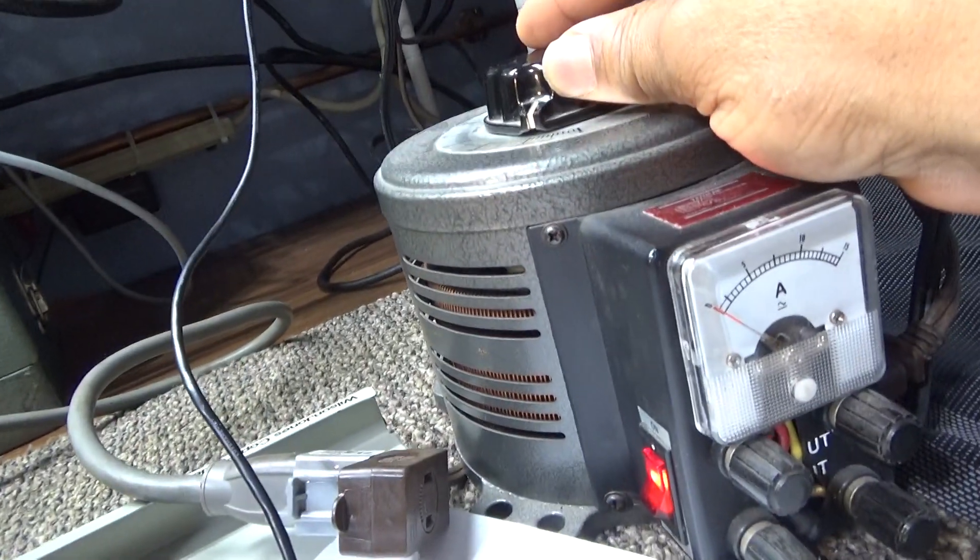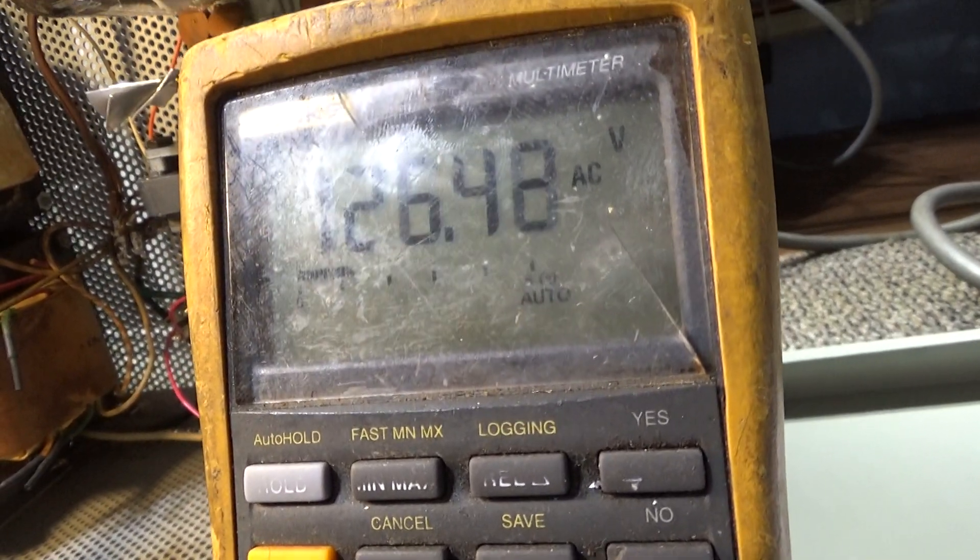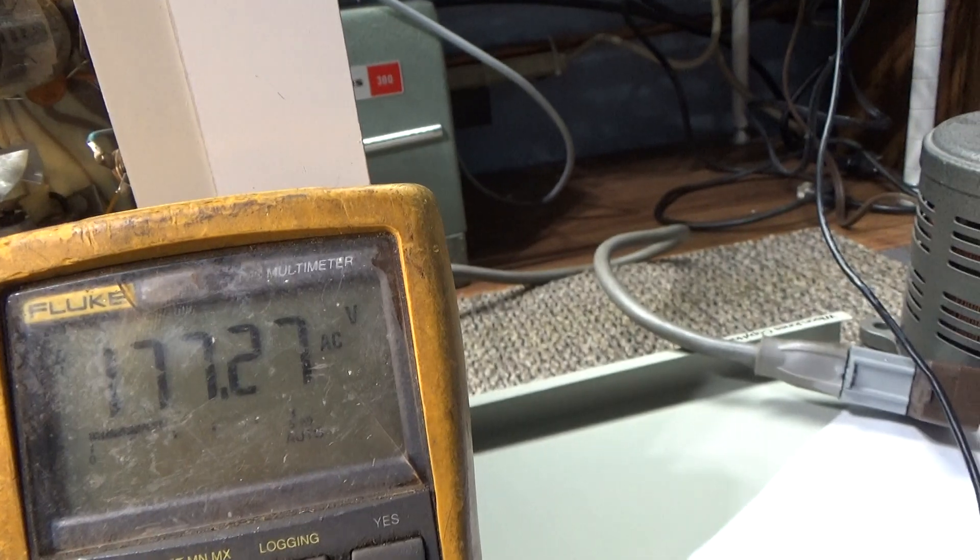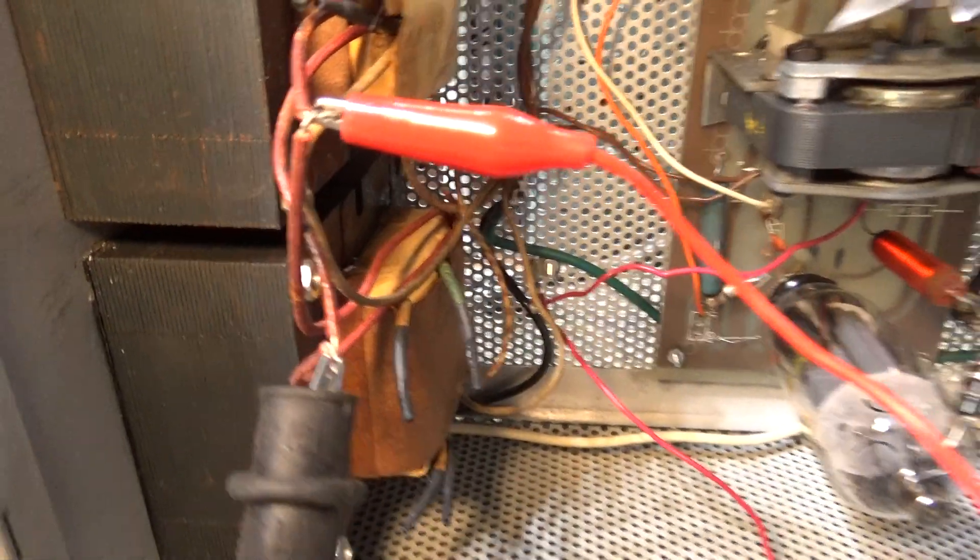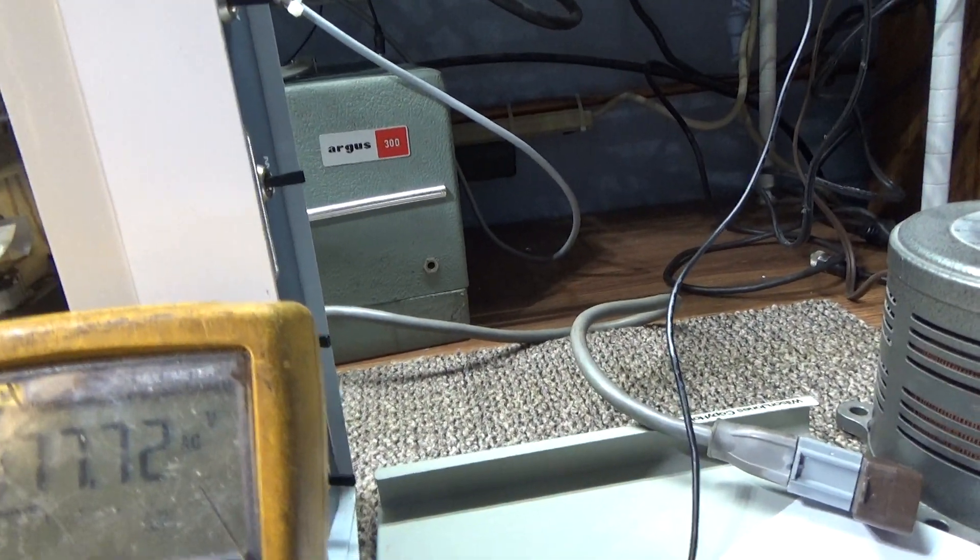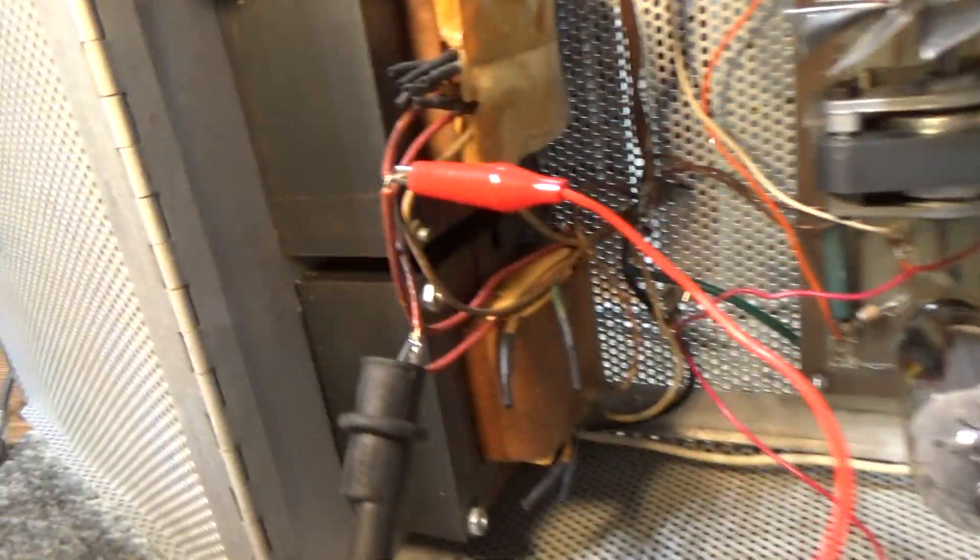Since I think I got them wired right, I'm gonna slowly turn up the variac some more. We're up to 20, looking at my meter and checking for smoke and arcs. Now we're up to 30. Again, the power supply capacitor board is not in the circuit. The high voltage stops right there.